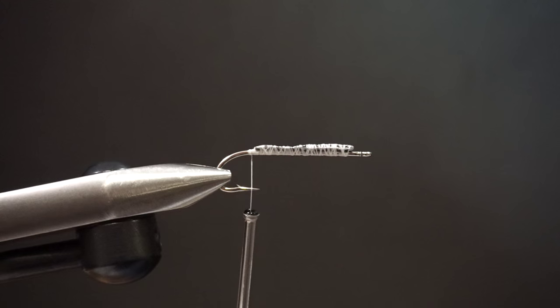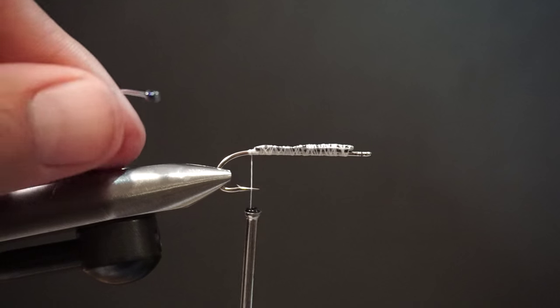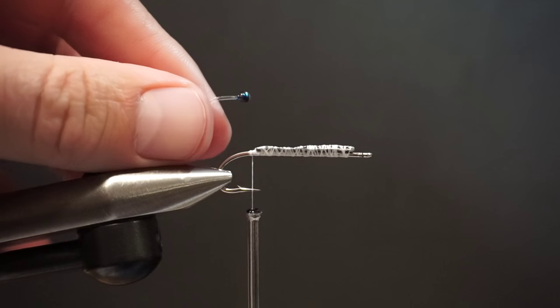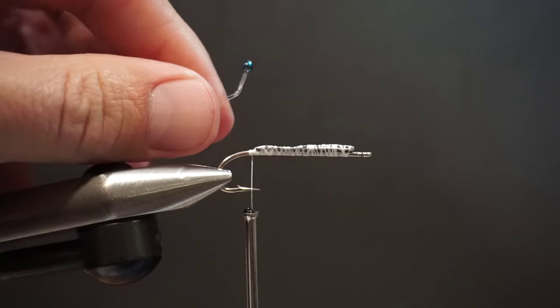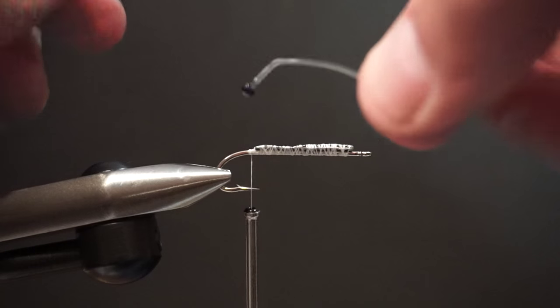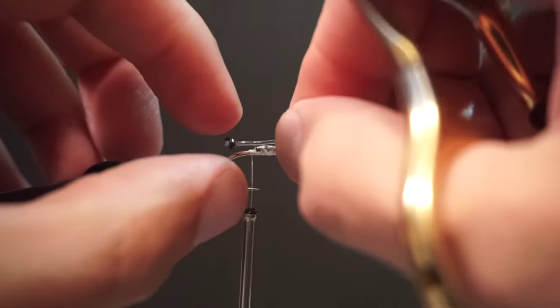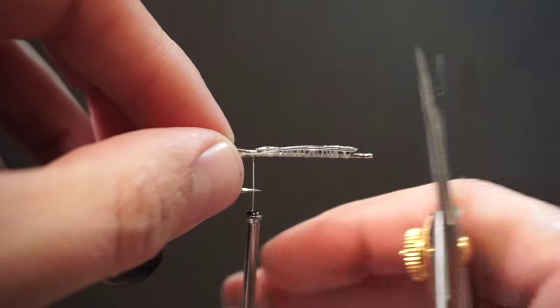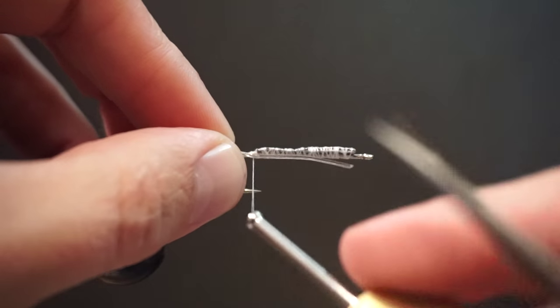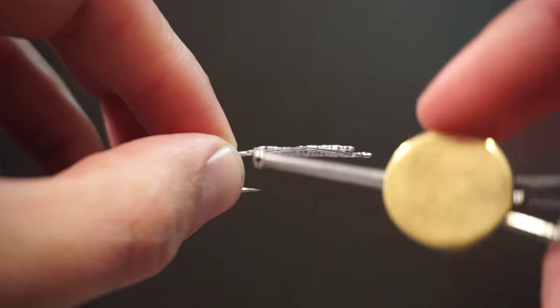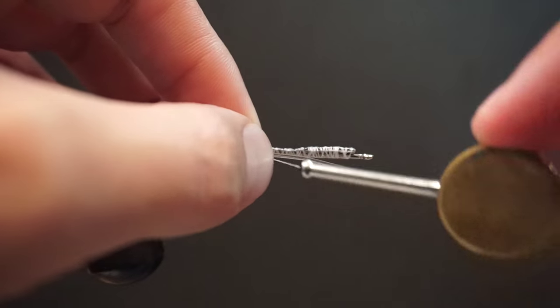Next we're going to tie in our mono eyes here. And I've actually made these with some killer caddis beads, small, on some 40 pound mono. Tipped off with a little black sharpie. We're going to tie these right at the bend of the hook, here on the hot side of the hook shank.